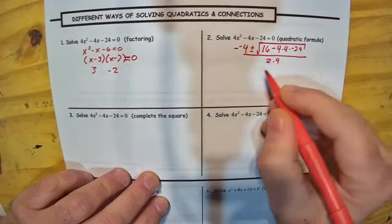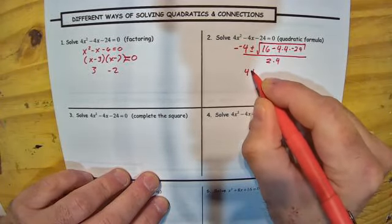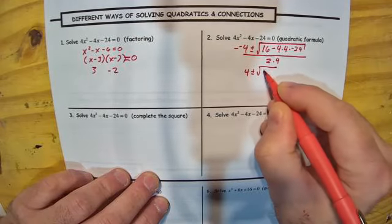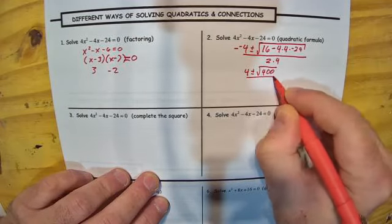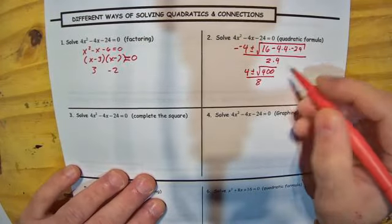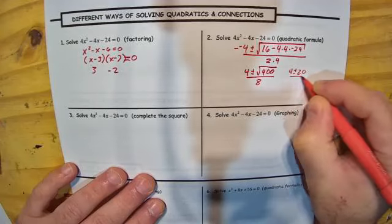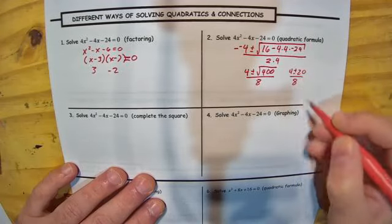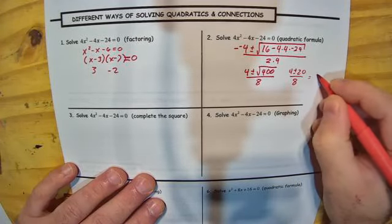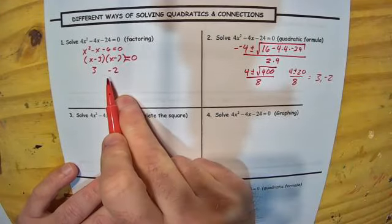When I simplify this, the double negatives cancel out, we're going to get 4 plus or minus the square root of 400, all over 8. The square root of 400 is 20, so it's 4 plus or minus 20 over 8. When we simplify this, we're going to get 3 and negative 2 — the same solutions we got from factoring.